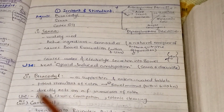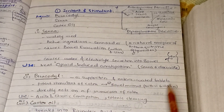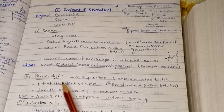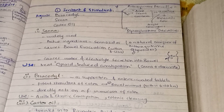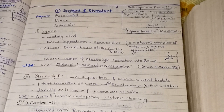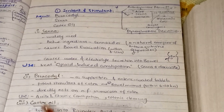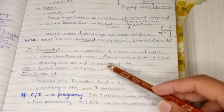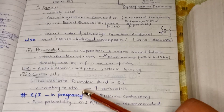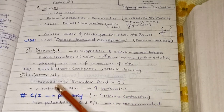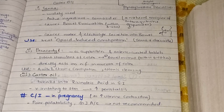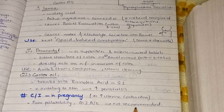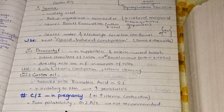The second agent is bisacodyl, used as suppositories and enteric-coated tablets. Bisacodyl is a potent stimulant of the colon that stimulates bowel movement within 6 to 10 hours. It directly acts on the nerve fibers in the mucosa of the colon and is used for acute and chronic constipation, as well as bowel cleansing before surgery. Castor oil is contraindicated in pregnancy because it increases uterine contractions, and has poor palatability with GI adverse effects, so it is not recommended.